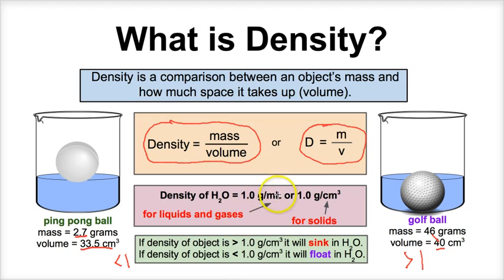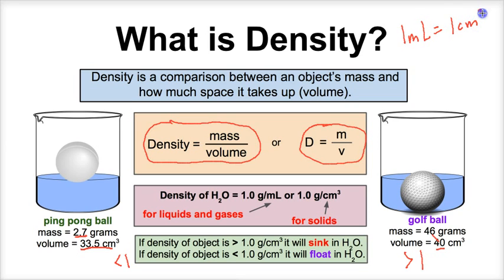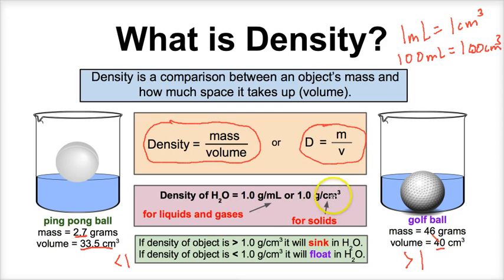When measuring volume, milliliters and liters are typically used for liquids and gases, whereas cubic centimeters or cubic meters are typically used for solids. That's because one milliliter is the same thing as one cubic centimeter. So if you have 100 milliliters of water, this is the same thing as 100 cubic centimeters of water — they're interchangeable. We just use milliliters for liquids and gases and cubic centimeters for solids.